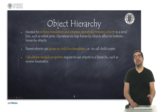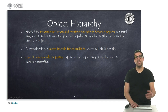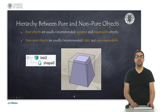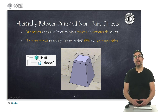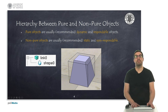The software includes some calculation modules, such as inverse kinematics or motion planning, and these modules need hierarchical structures. Pure geometries are typically hierarchically superior to non-pure geometries. This is because all collision physics and dynamics are applied to pure geometries, so that non-pure ones will always be associated with the position and orientation of pure geometries.